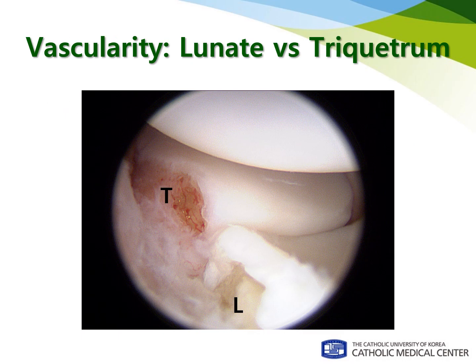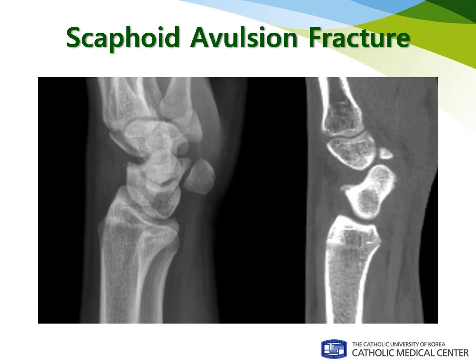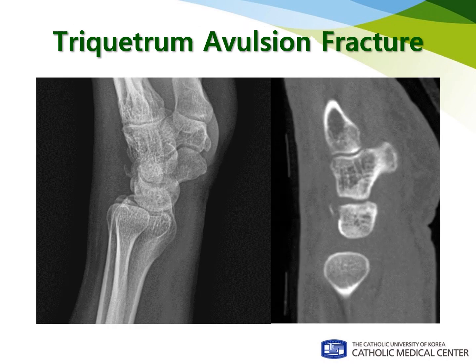Decreased vascularity of the lunate is also a matter of concern during scapholunate reconstruction, and it may result in fracture or avascular necrosis with large drill holes. I also found that dynamic scapholunate and lunotriquetral instability frequently coexist in the same patient, which can be explained by Mayfield's progressive perilunate instability theory. Scapholunate and triquetrum avulsion fractures are sometimes identified in the sprained wrist patient, as seen in these radiographs, and this indicates the dorsal intercarpal ligament has an important role in developing scapholunate and lunotriquetral instability.